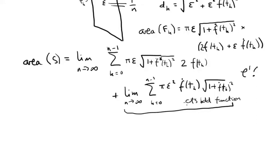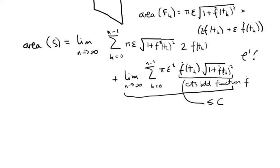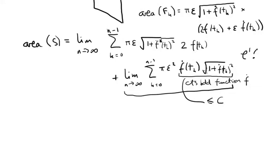So f dot is bounded. Continuous bounded function f dot implies that this is bounded, this is bounded, so this whole thing is bounded by some constant c, bounded both from above and from below. So in magnitude, it's bounded.